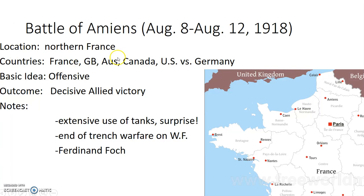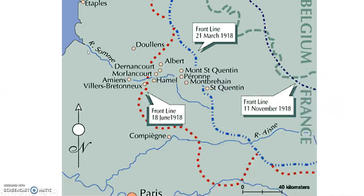The second battle we're talking about is usually looked at as the turning point of World War I — the Battle of Amiens, occurring over four days in August 1918 during the spring offensive. Looking at the map, the red dotted line shows how far Germany gets in their spring offensive — and the blue line is where the fighting was prior to that. You can see Germany is getting closer and closer to Paris. But after the Battle of Amiens, by November 1918 the line is pushed all the way back through France and almost out of France completely.